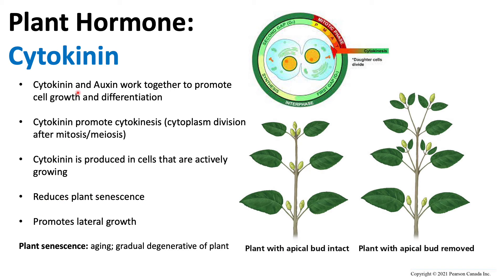Cytokinin also reduces plant senescence — plant senescence is known as aging or the gradual degeneration of a plant. Essentially, if cytokinin is actively producing more and more cells, it reduces the effects of cell death, aging, and the degeneration process.